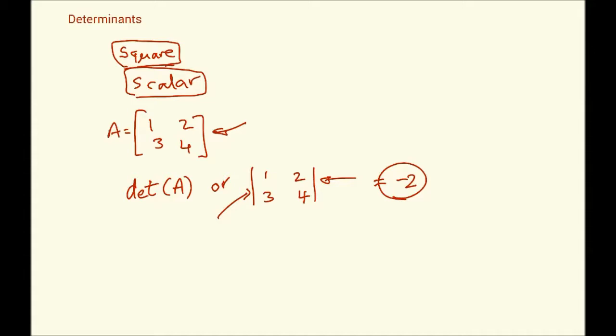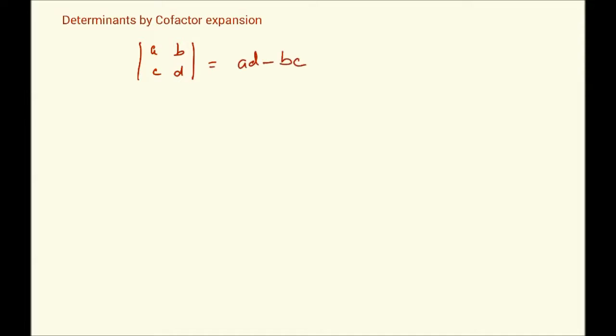We begin by noting that the determinant of a 2×2 matrix [A, B; C, D] is A·D minus B·C. This is very important and forms the base ingredient for the method of cofactor expansion. For 2×2 matrices, we simply calculate the determinant as AD minus BC. Also, the determinant of a 1×1 matrix, say just A, is just A.